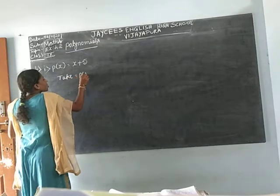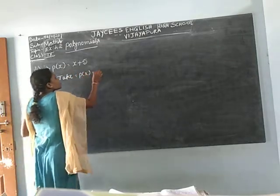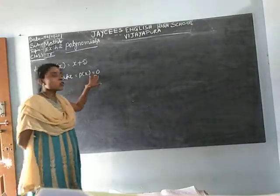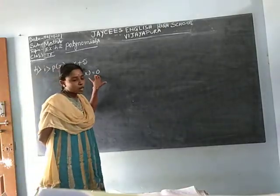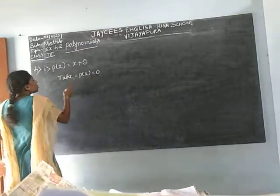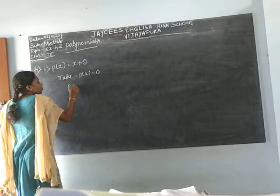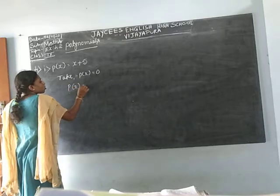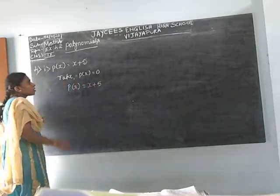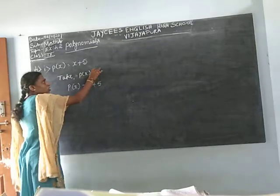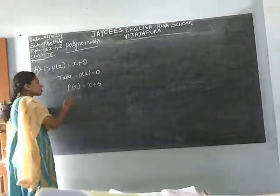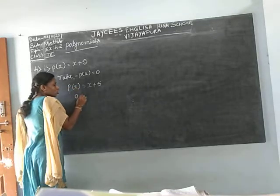We set P(x) = 0. We can find the zero of the polynomial by assuming P(x) = 0. P(x) = x + 5. We substitute P(x) value as 0, so x + 5 = 0.